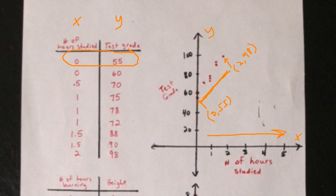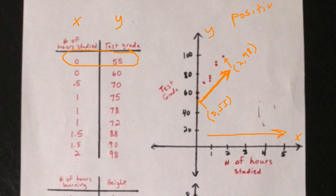Well, it's pretty obvious that they're increasing — they're going up to the right. Which makes sense, because normally the more time you spend studying for a test, the better grade you'll get. So because the test grades are increasing as the number of hours is increasing, this is considered a positive correlation. As one value goes up, the other value also goes up.